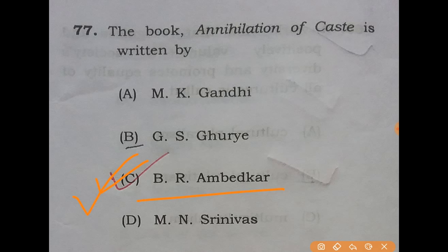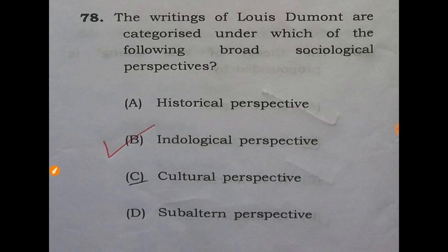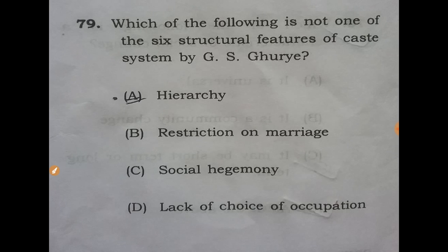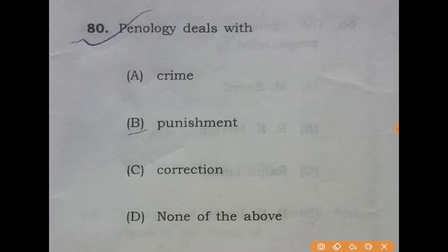Question 77: the book 'Annihilation of Caste' is written by — the answer is C: B.R. Ambedkar. Question 78: the writings of Louis Dumont are categorized under which broad sociological perspective? The answer is B: ideological perspective. Question 79: which of the following is not one of the six structural features of the caste system by G.S. Ghurye? The answer is C: social hegemony.